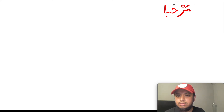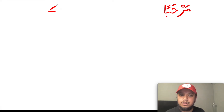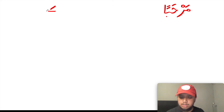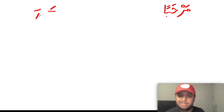The diacritical markings include the fatha, dhamma, and kasra — also known in South Asian languages as zhabar, pesh, and zayr respectively. The fatha is sometimes known as zhabar, and the kasra is known as zayr in South Asian languages.